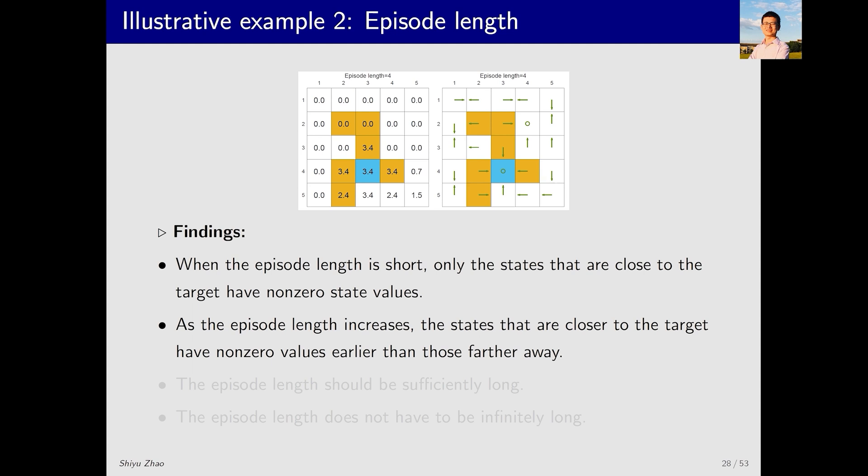Through the example we just discussed, we've uncovered some interesting findings. Let's summarize. First, when the episode length is short, only the states that are close to the target can reach the target within such a limited number of steps and find the correct policy. However, as the episode length gradually increases, states farther from the target can also reach it over time, eventually finding the optimal policy. In essence, the episode length should be sufficiently long to allow all states have the opportunity to reach the target. However, it doesn't have to be infinitely long, it just needs to be sufficiently long. The specific lengths mentioned in our example, such as dozens or hundreds of steps, were provided for illustrative purposes. In practice, the appropriate length depends on the specifics of the problem at hand and should be analyzed accordingly.